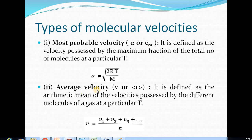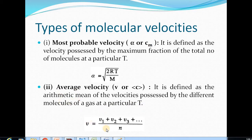The next one is average velocity, denoted by symbol v or C-average. It is defined as the arithmetic mean of the velocities possessed by the different molecules of the gas at a particular temperature T. As the name indicates, it is the average or mean of the various velocities possessed by the different molecules of the gas at a particular temperature T.